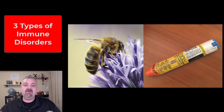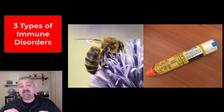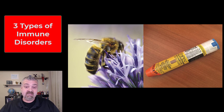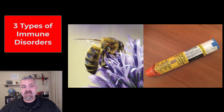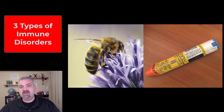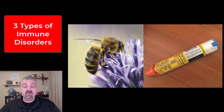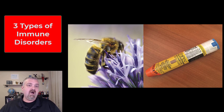Hey everybody, Dr. O here. In this video, I'm just going to introduce the three different types of immune disorders. We'll cover the immune system and each of these disorders in great detail in other videos, but here I want to compare and contrast them quickly. We're going to talk about the hypersensitivities, the immunodeficiencies, and autoimmunity.